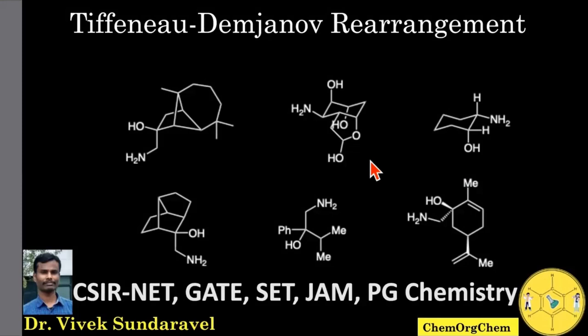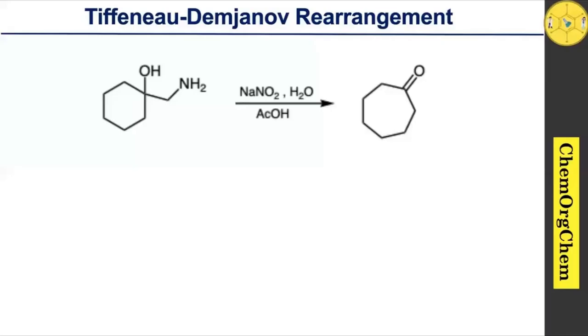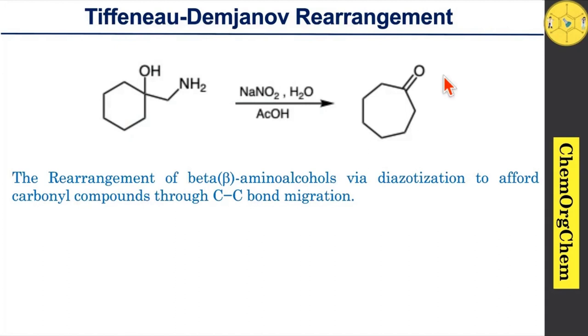Welcome back. Today we are going to explore the Tiffano-Temchanow rearrangement and their mechanistic details along with some interesting examples. If you are new to this channel don't forget to subscribe. The Tiffano-Temchanow rearrangement is one of the semi-phenicol rearrangements. According to it, a beta amino alcohol in the presence of sodium nitrite in acetic acid quickly rearranges into the corresponding carbonyl compound.